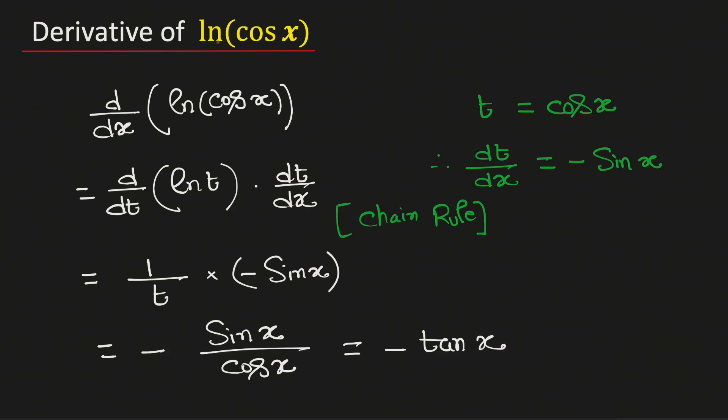Therefore, the derivative of ln of cosine x is equal to negative tan x, and this is our final answer.